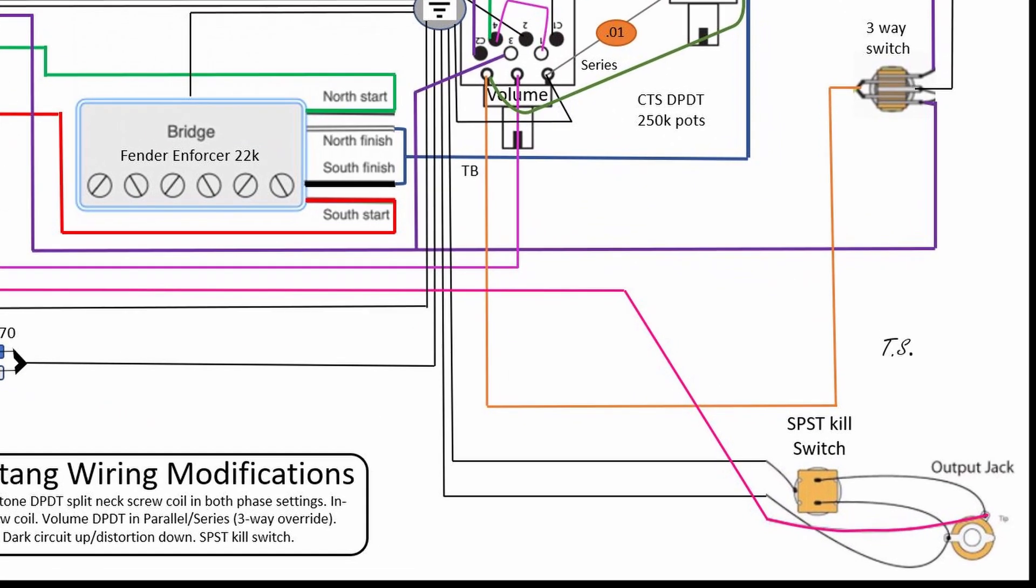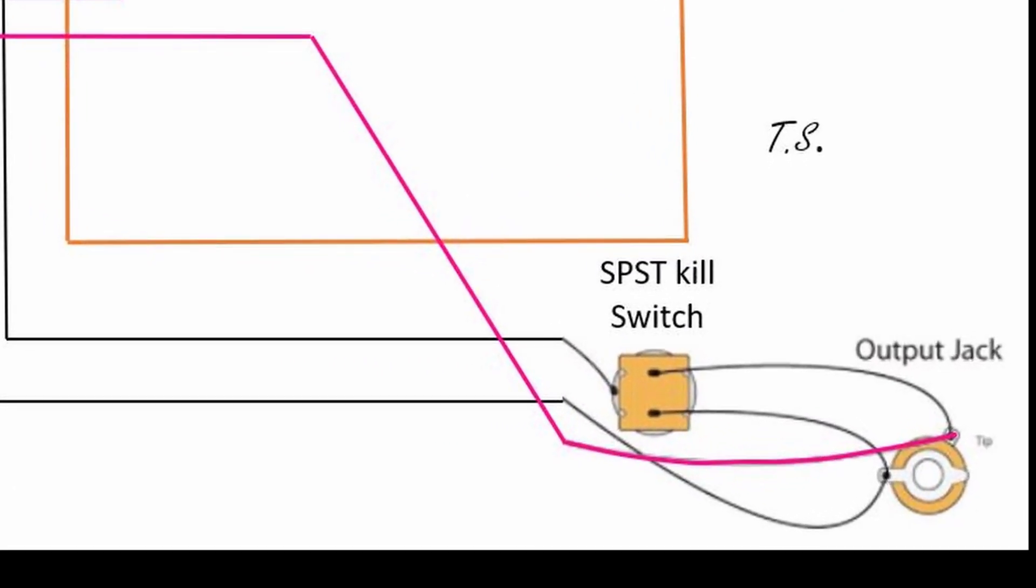So if we're talking about the output jack, let's go to that and talk about the kill switch. So you can see how both the positive and the negative are connected to this kill switch from the output jack. Basically, this is an SPST kill switch, but not just any one. This is called a normally closed SPST switch.